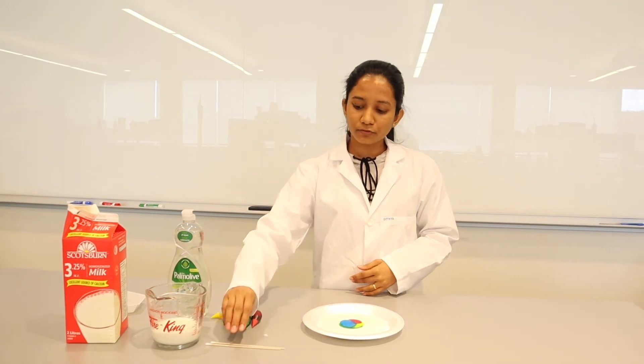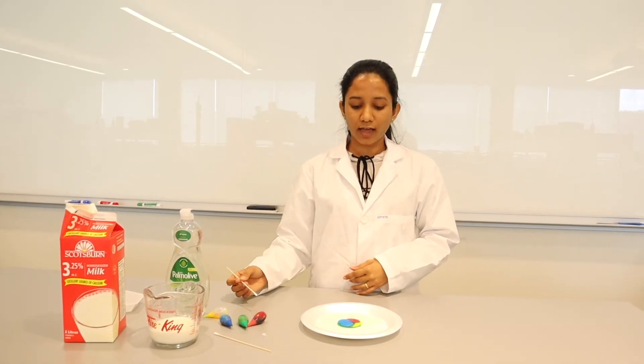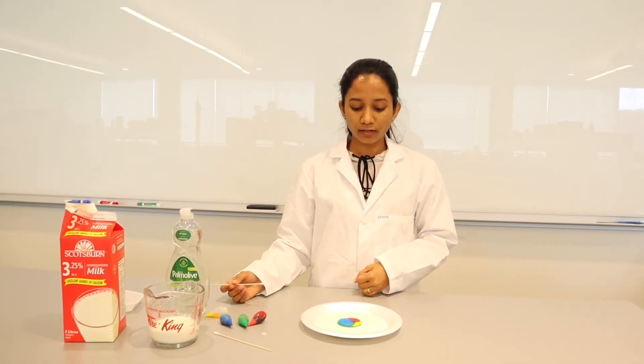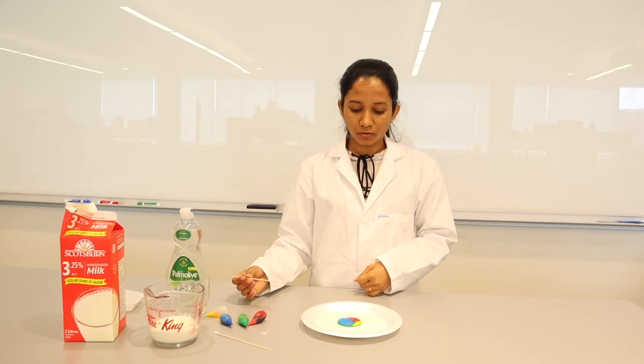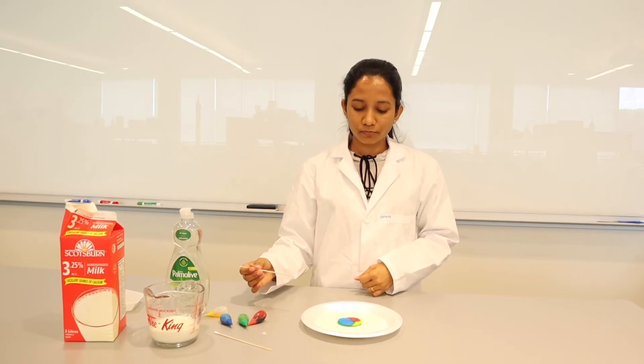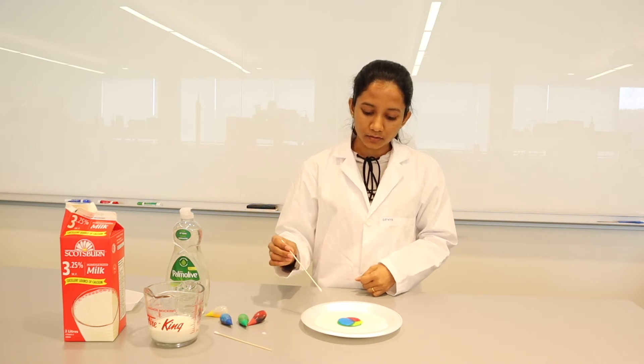Now you can see since the food coloring contains water and milk contains a lot of fat, they won't mix up together. So instead the drops of food coloring stay at one place.